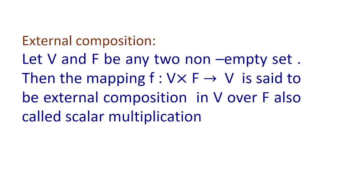The next important definition is external composition. Let V and F be any two non-empty sets; then the mapping F × V → V is said to be the external composition of V over F, also called scalar multiplication. So these are the two important definitions: vector addition and scalar multiplication. Here V is the set of vectors and F is the set of scalars.